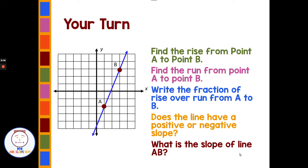Pause the video to answer the practice questions, then come back. Welcome back! Finding the rise from A to B on the blue line, I counted one, two, three, four, five spaces for the rise, and one, two spaces for the run. The fraction is five over two. The line goes up from left to right, so it has a positive slope. The slope is positive five-halves.